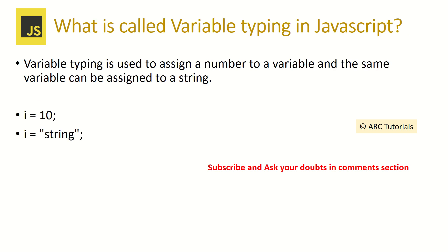What is variable typing in JavaScript? Variable typing is used to assign a number to a variable, and the same variable can then be assigned a string. For example, the same variable name can first be declared as a number and second as a string. Here, the variable i is first assigned the value 10, and the second assignment is a string.